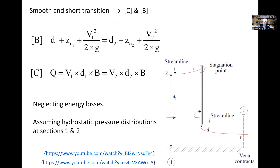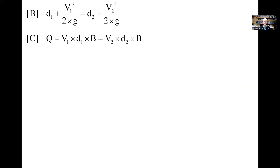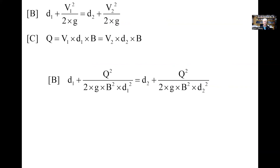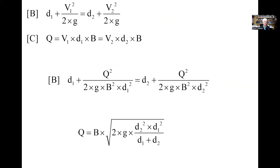Solving quantitatively, we apply continuity and the Bernoulli principle for this smooth and short transition, neglecting energy losses and assuming hydrostatic pressure distribution at sections 1 and 2. Knowing the upstream and downstream water depths, we express the Bernoulli equation in terms of total discharge, obtaining a direct analytical relationship between total discharge BQ and the upstream and downstream water depths D₁ and D₂. For this application, we find a model discharge of about 8 liters per second.